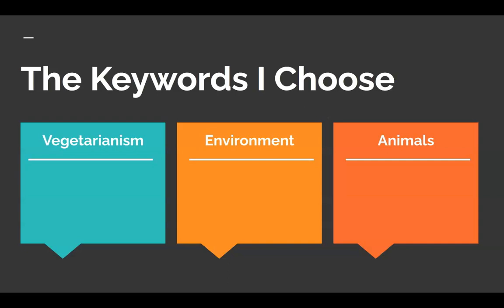Another way to get more articles that apply to our research is to search similar keywords. To do that, we'll take the keywords that we have listed here and start listing synonyms. For example, let's take vegetarianism and think of all the synonyms we can think of. Just a quick note: if you find a synonym that's a phrase, make sure that you put quotes around it so that the database is searching the exact phrase.